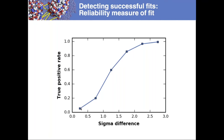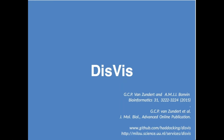PowerFit is a simple software that performs rigid body fitting with optimized sensitivity and speed, and provides robust reliability indicators. The second software, DisVis, tackles a different problem but uses the same algorithms as PowerFit.